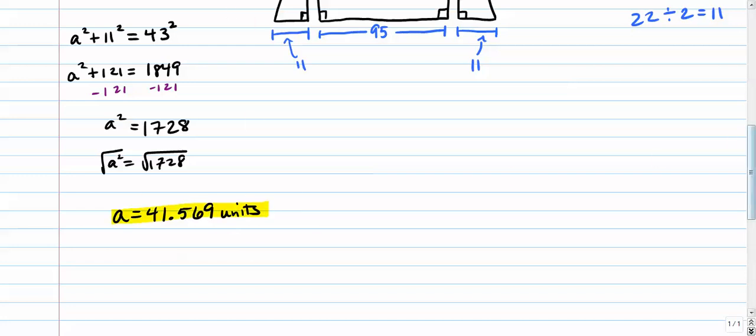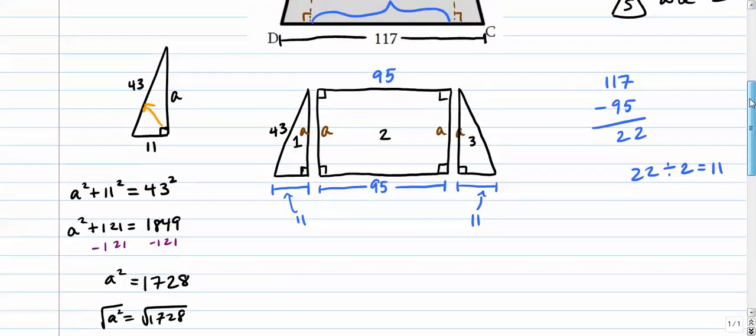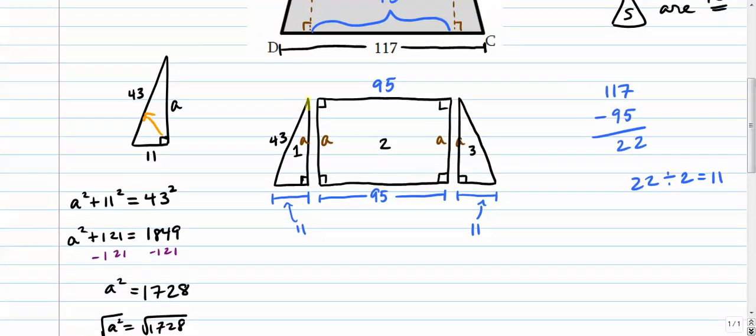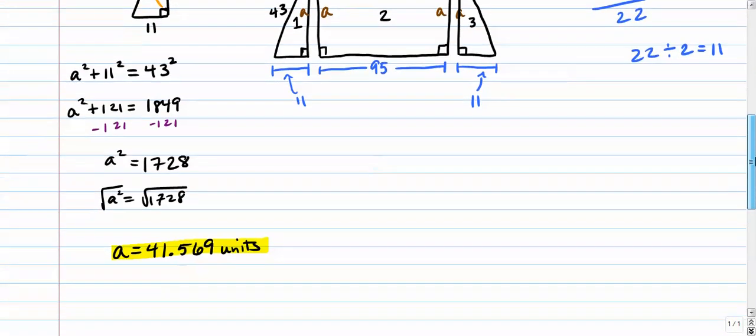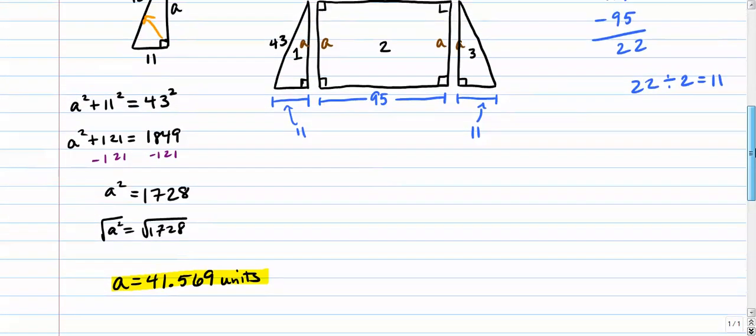So the altitude, and that makes sense. It's a pretty tall, skinny triangle. So we know, we clearly know that the hypotenuse has to be the longest, but in this case, it's not too much longer than our altitude because our base is so small compared to the other two sides. So our altitude in that case is slightly less than 43. We'll call it 41.569.